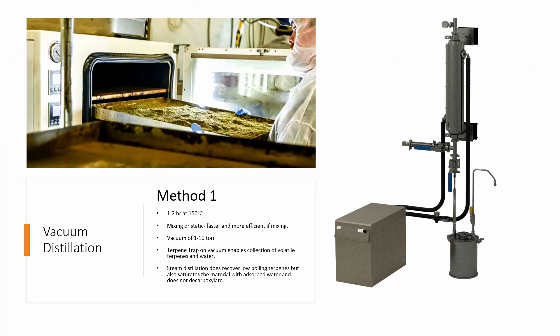Vacuum distillation method one: one to two hours at 150 degrees. You can see there's a vacuum oven in the background. There are different types of pans and there's a whole science behind how you would deal with the pans in a vacuum oven to get the best mass transfer out. This is a typical AI oven — it's got five shelves and each of the shelves are independently heated.